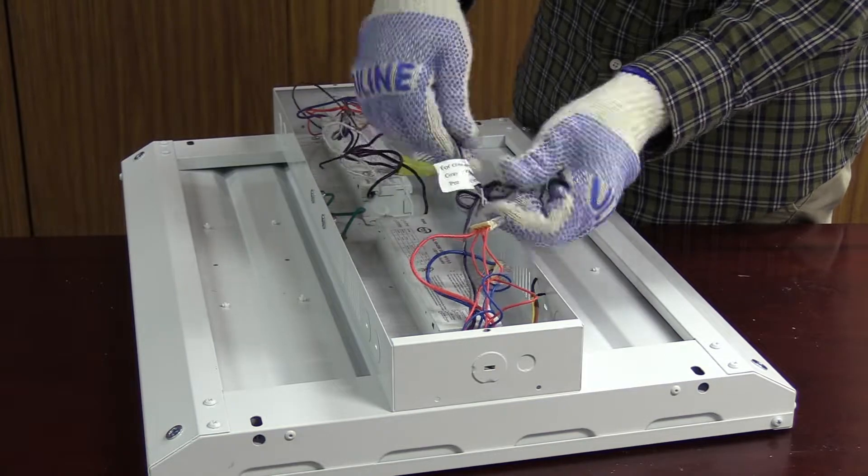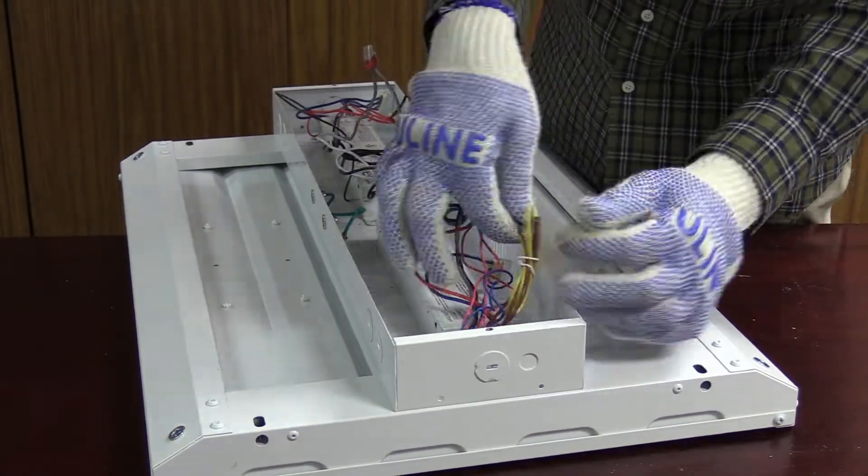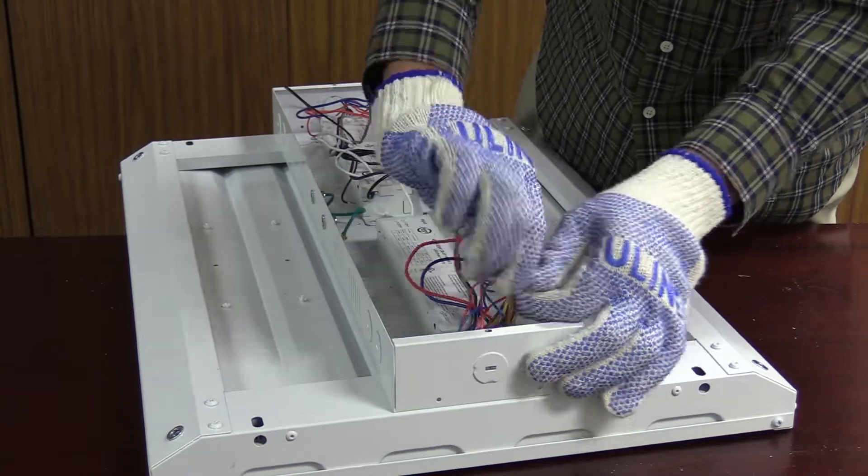Then, we'll locate the yellow auxiliary wire, purple dim positive wire, and gray dim negative wire.